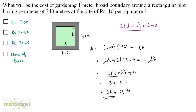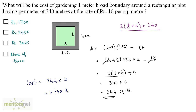The per square meter cost of gardening is 10 rupees per square meter. So the total cost equals the total area times the per unit cost: 344 times 10, which is 3440 rupees. Option C is the correct answer.